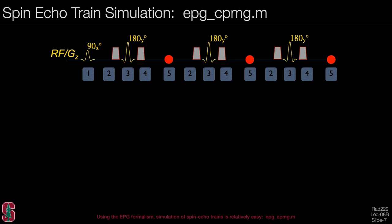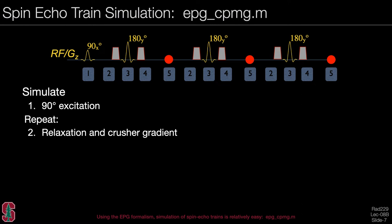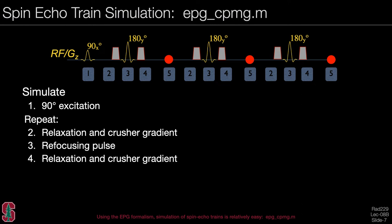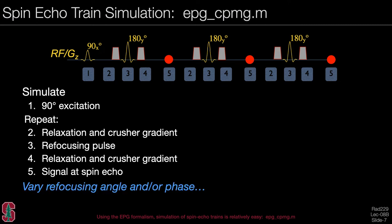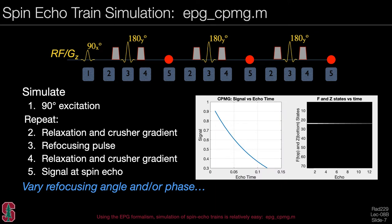Throughout this lecture, I use a function called epg_cpmg.m — a MATLAB function that is a very simple way to simulate the effect of these quite complicated sequences. Here you really see the power of the extended phase graphs. The sequence simulates the 90-degree excitation, then repeats over the echo train: relaxation and a crusher gradient, a refocusing pulse, more relaxation and a crusher gradient, then samples the signal at a spin echo. We can vary the refocusing angle and phase to see how the signal behaves. With perfect 180-degree pulses, the signal decays as an exponential.